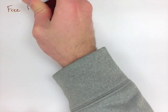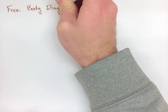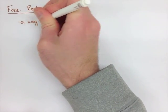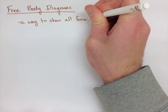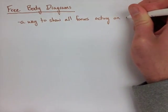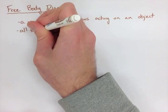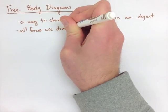Free body diagrams are a way to show all the forces that are acting on an object. They're very powerful because a free body diagram is another way to show our given information from a question.